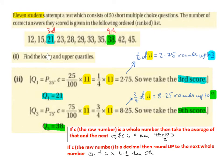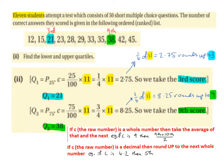Part 2, find the lower and upper quartiles. Q1, the lower quartile, is the same as the 25th percentile. So C is 25 over 100 times 11, which is the same as a quarter times 11, which is 2.75. So we round up to 3 — we always round up when we have a decimal for percentiles. So we take the 3rd score, which is 21. Q1, the lower quartile, is 21.